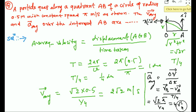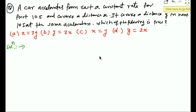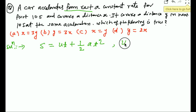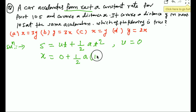Next problem: a car accelerates from rest at a constant rate for the first 10 seconds and covers distance x. It covers distance y in the next 10 seconds at the same acceleration. We apply s = ut + ½at². Since u = 0, x = ½ × a × 10² = 50a. This is the first equation.